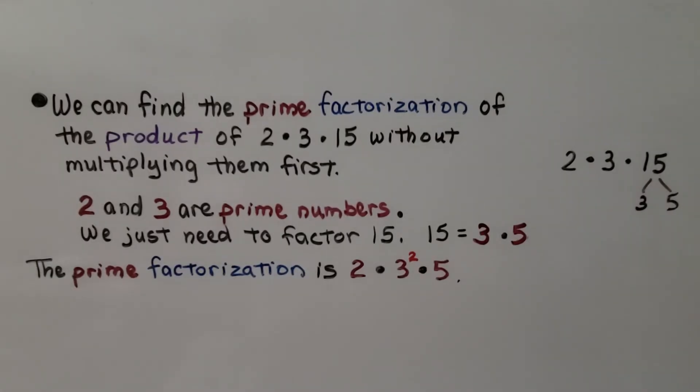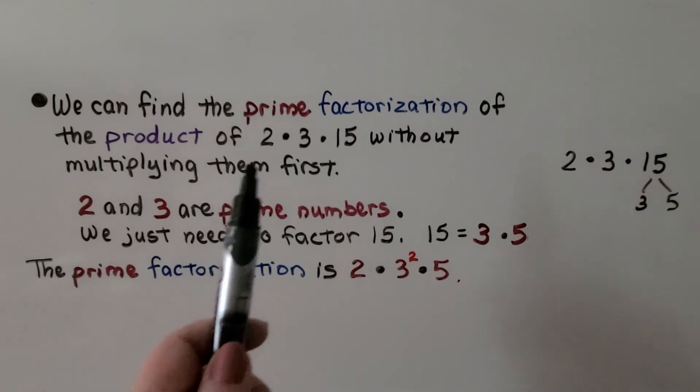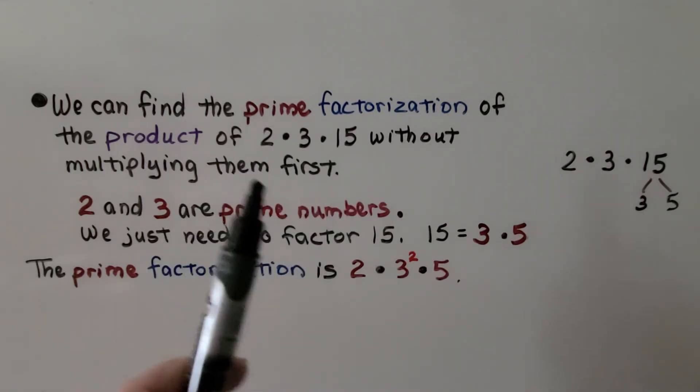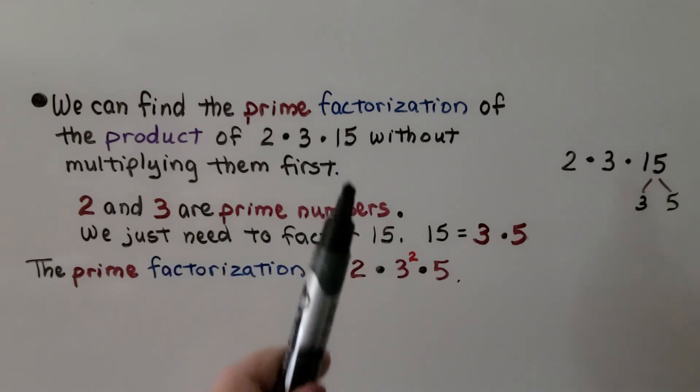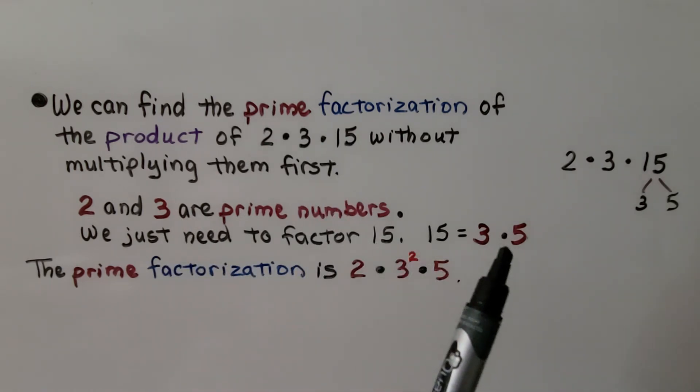We can find the prime factorization of the product of 2 times 3 times 15 without multiplying them first. We don't need to multiply them together. 2 and 3 are prime numbers. We just need to factor 15, and 15 is 3 times 5.